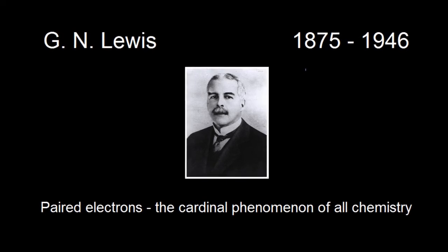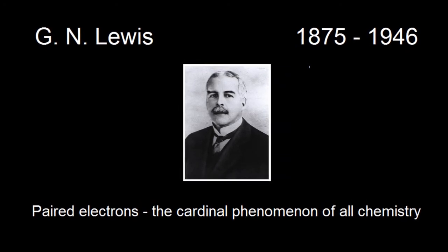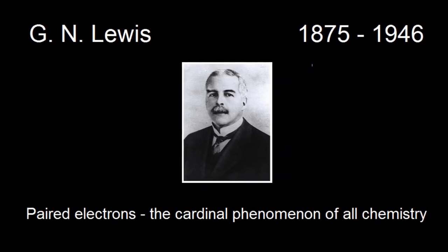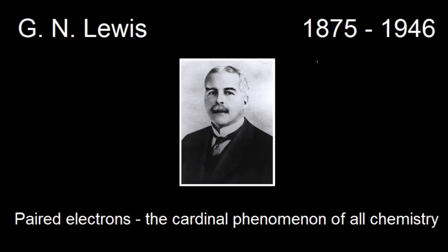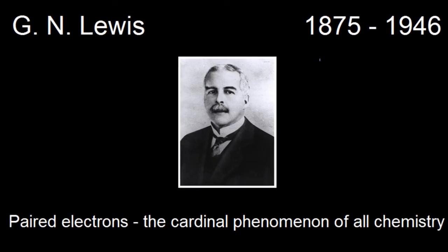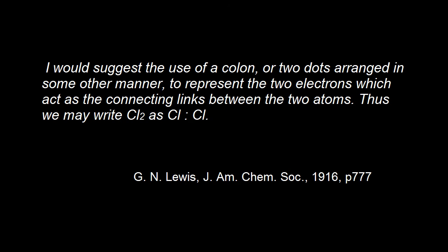In 1916, Gilbert Lewis, a professor of chemistry at the University of California, Berkeley, wrote an article in which he challenged all contemporary thinking by suggesting that chemical bonds consist of two electrons in a shared space between two atoms. Then, in the first simple example of what would later become known as Lewis dot diagrams, he suggested dots or colons could be used to represent electrons or bonds.